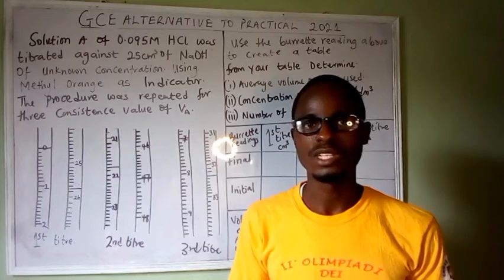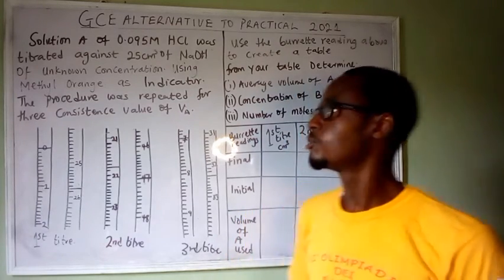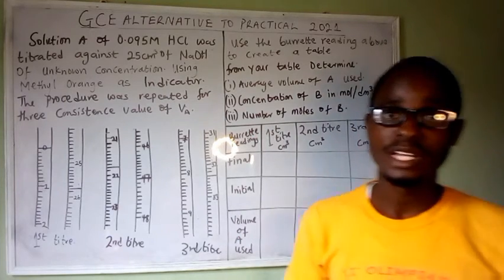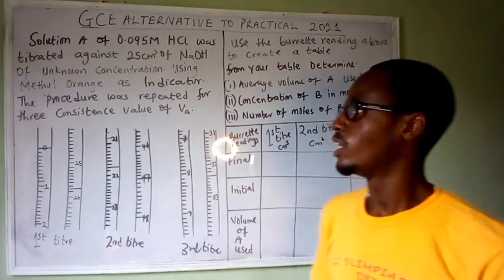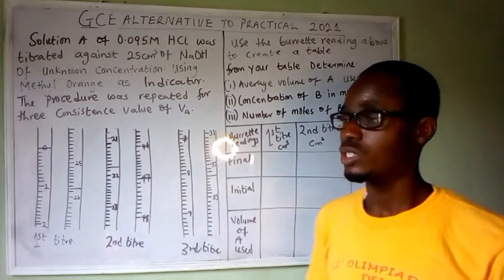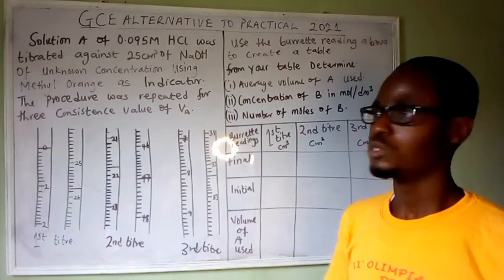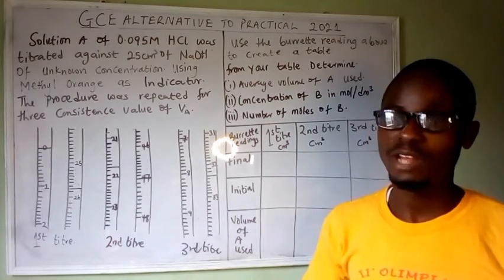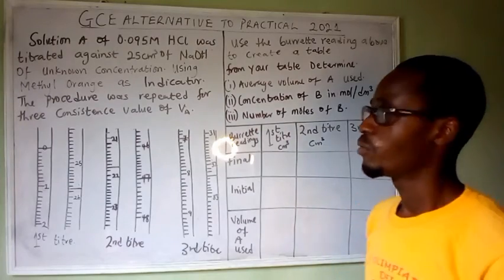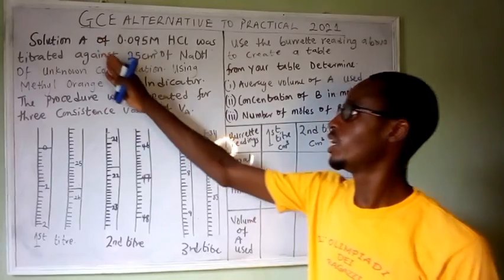Let's look at a typical example of how the alternative to practical question in chemistry is solved. We want to consider an experiment that has been performed already, and the manner in which the reading was taken is given to us in a diagram. From the diagram we are going to take the burette reading instead of live. This is how the experiment is being performed according to this procedure.